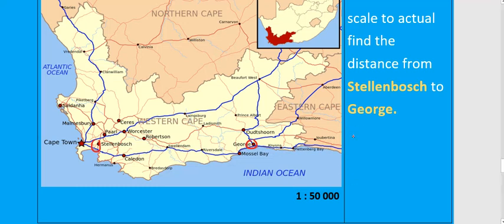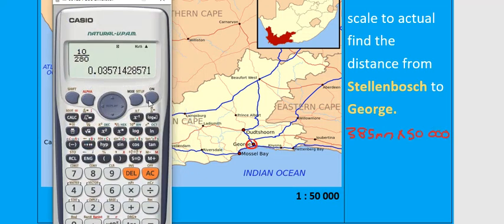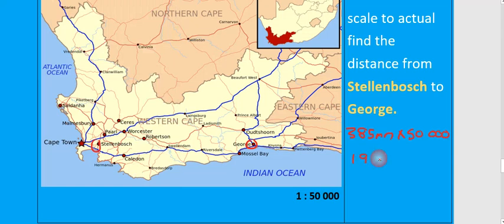So then you would take the 385 millimeters and multiply it by the 50,000 from the scale. So: 385 multiplied by 50,000 equals 1,925,000 millimeters. Remember, we measured in millimeters — you could also measure in centimeters; it doesn't really matter because at the end we are going to convert this distance anyway. So that is our real distance, but this distance is now in millimeters.